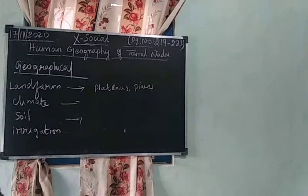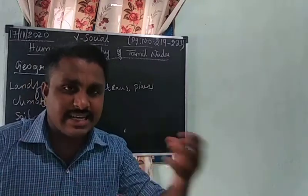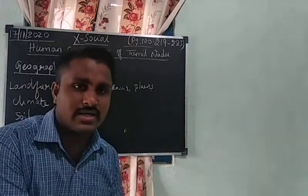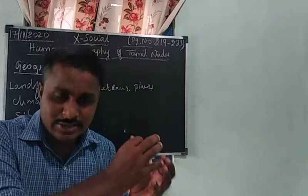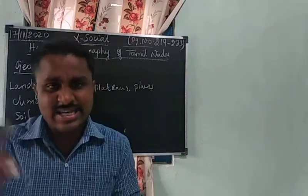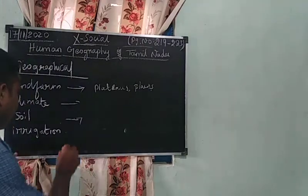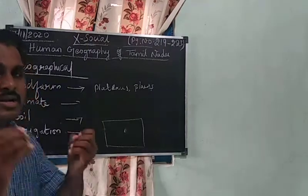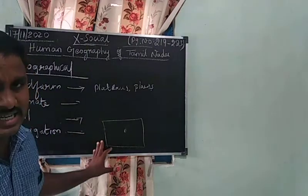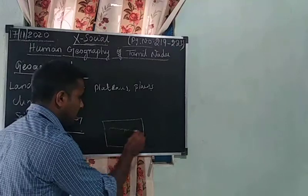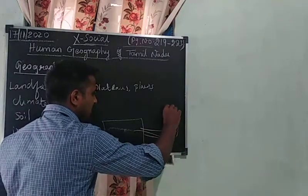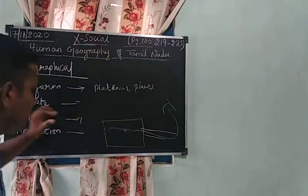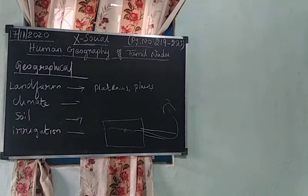Next is irrigation. We do not get water or rainfall all the time, so we store water and pass it through channels to the cultivation. Irrigation means storing water through a dam, lake, or canal, and then passing it through a channel to do cultivation.